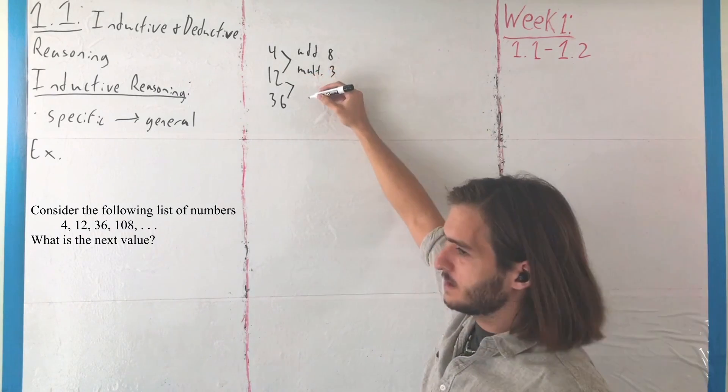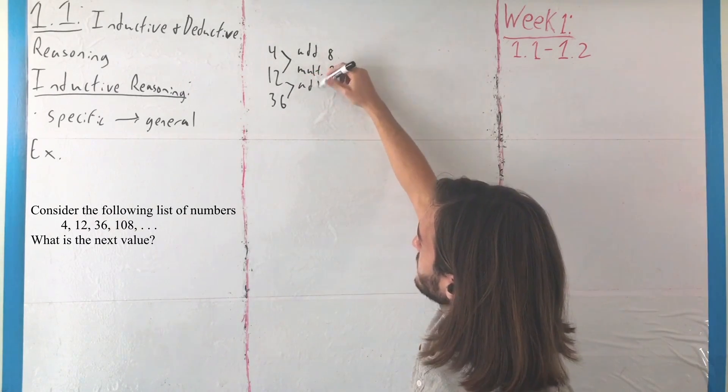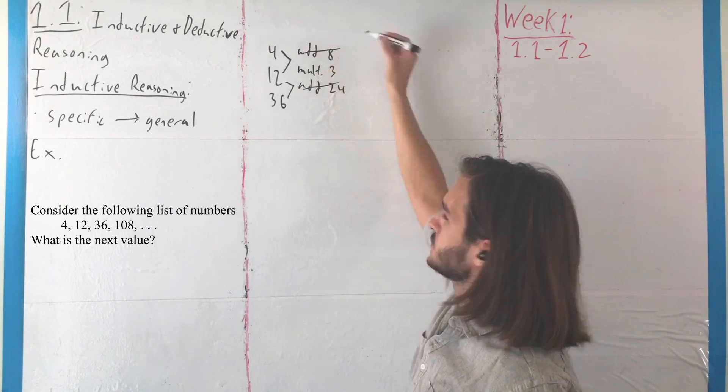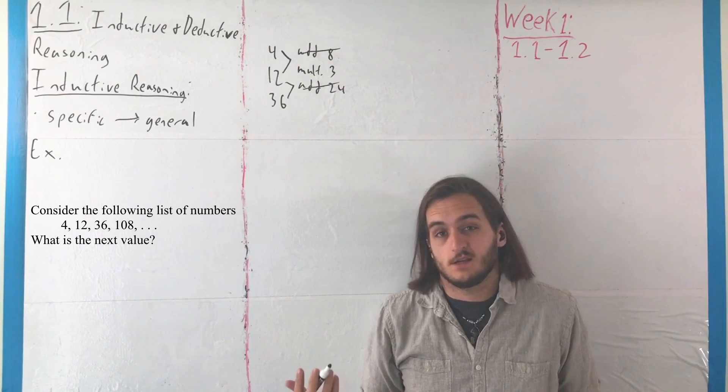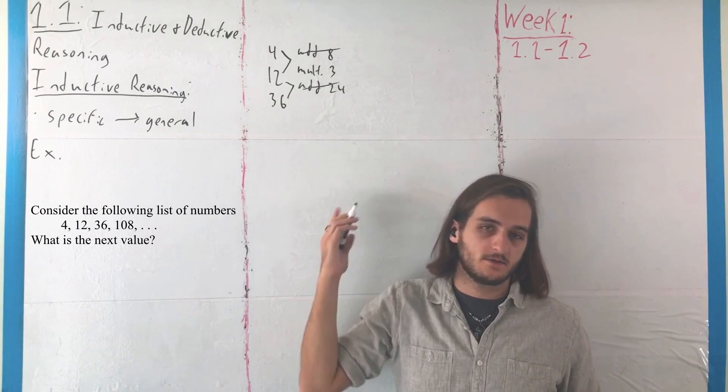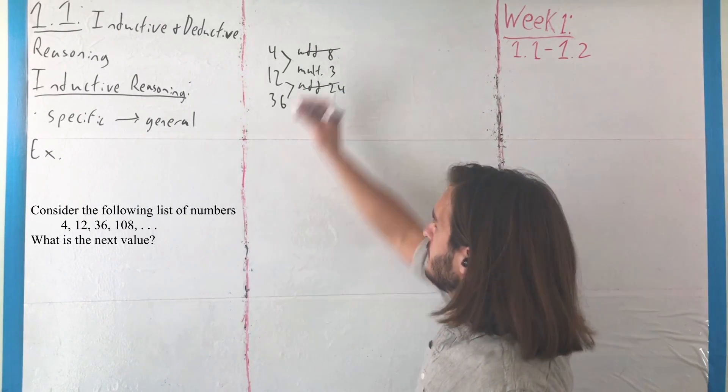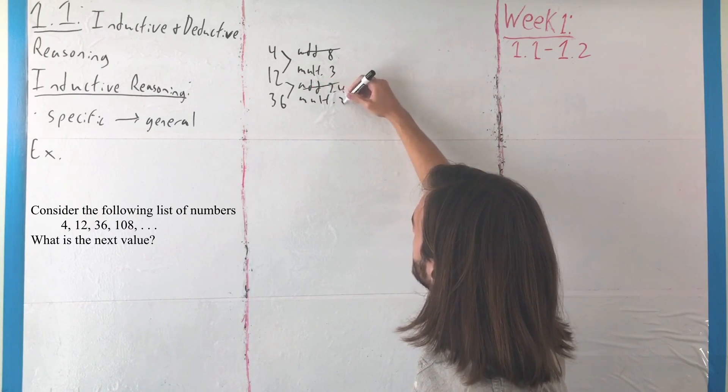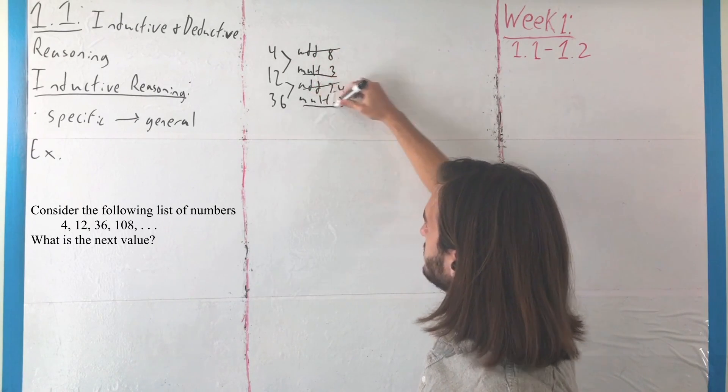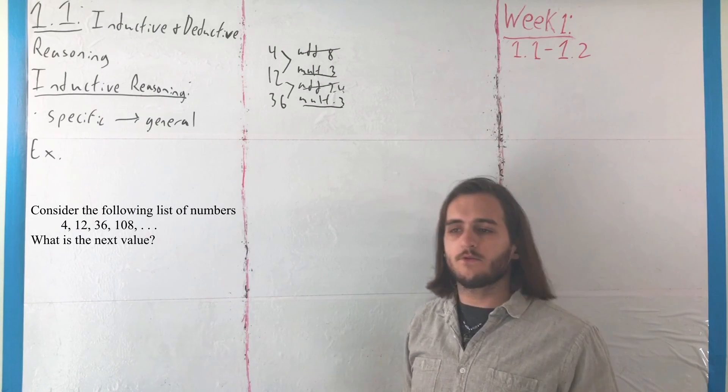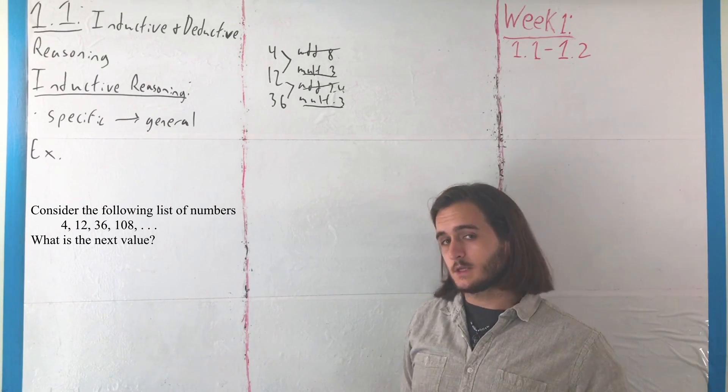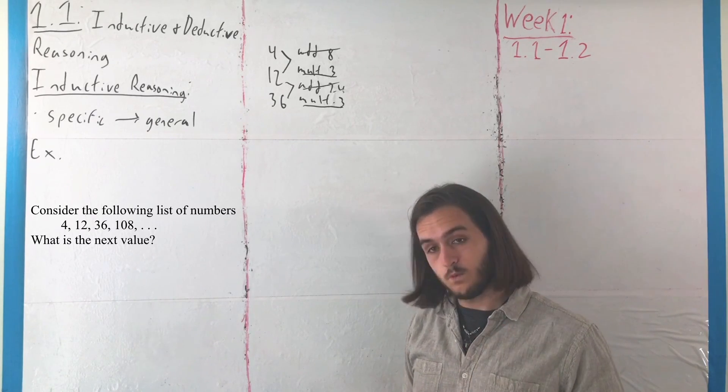But, anyway, here, thinking in that same way, we can either add 24, which is definitely not the same as adding 8. So, these can't be true, because we have one counterexample each. It doesn't matter what would happen in the other cases. If one's wrong, it's all wrong. But, the other option is multiplying by 3. So, we have in the first two cases, you multiply by 3, and hopefully you can tell or figure out, depending on how confident you are in your arithmetic, that 36 times 3 is 108.